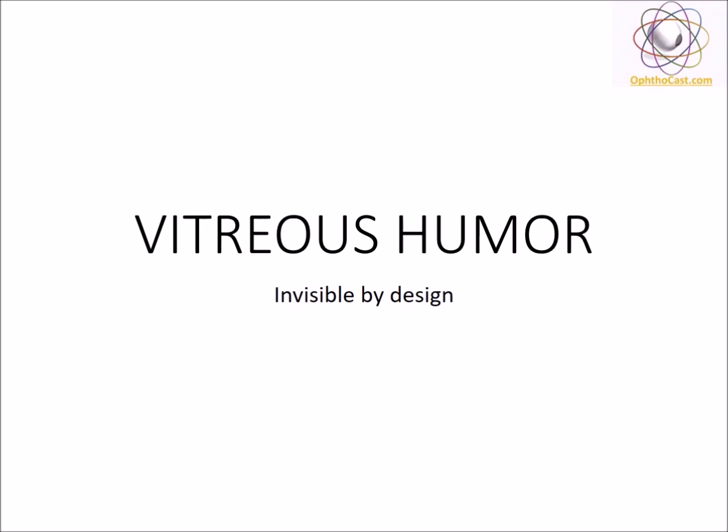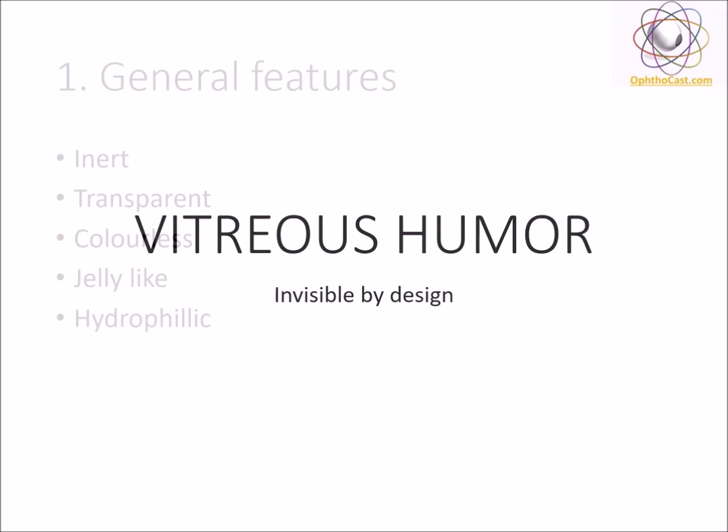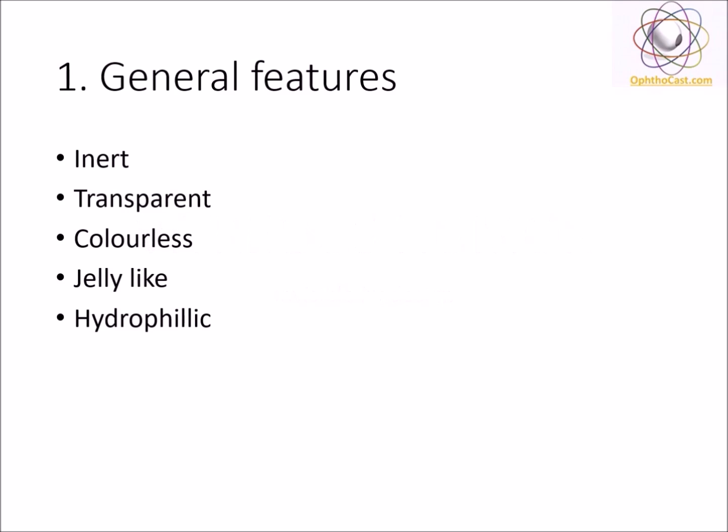The vitreous humor is a space occupier of the globe and a part of the optical system. What makes it unique is the plasticity it has while still being completely transparent. Let's delve deeper into this unique anatomical structure.